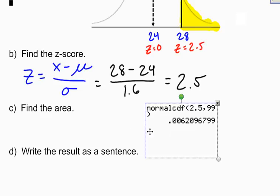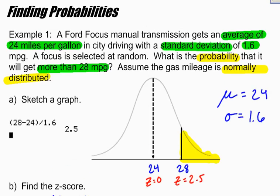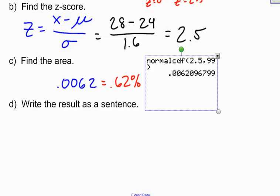Now I can also write 0.0062 as a percent. If I write it as a percent, that'd be the same as 0.62%. Now since we started with a word problem up here, we should always end with a sentence.